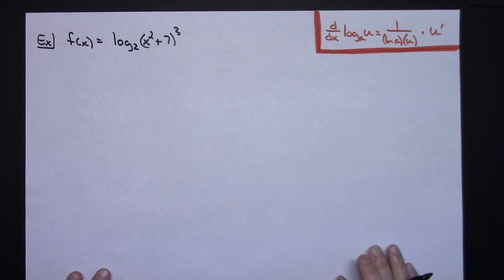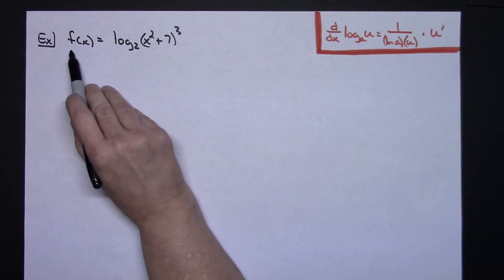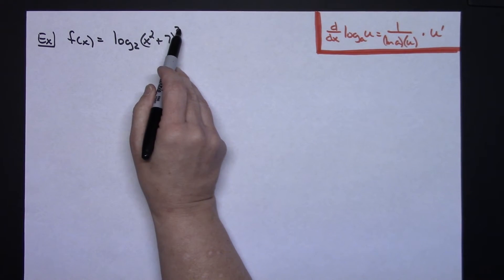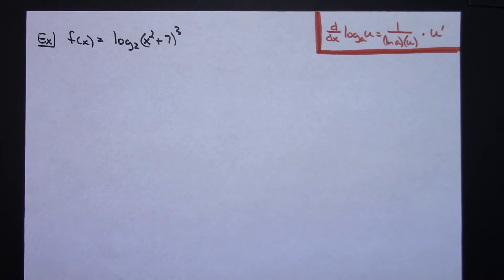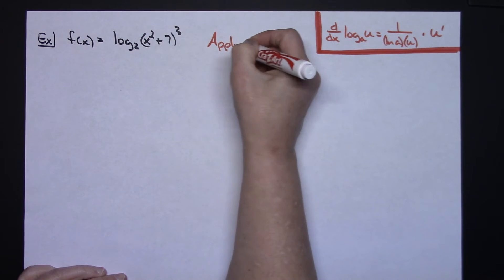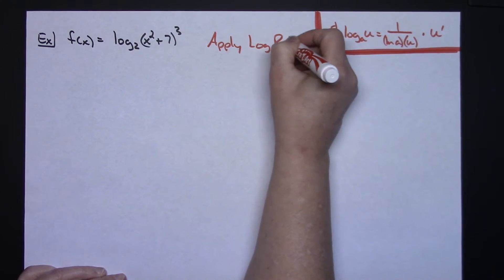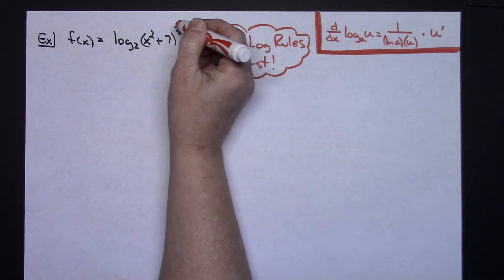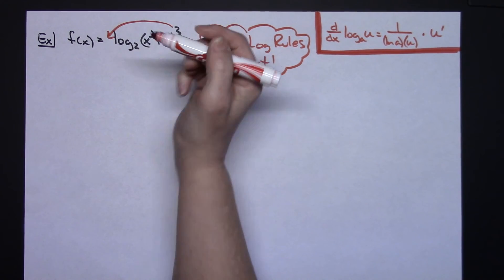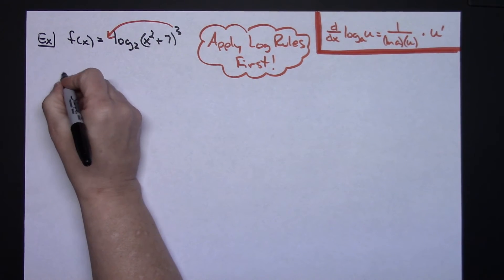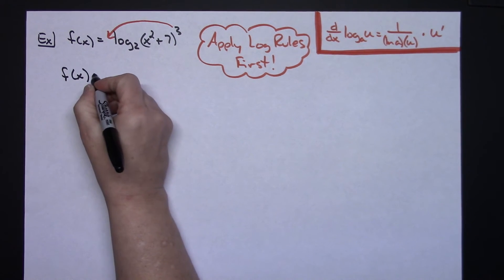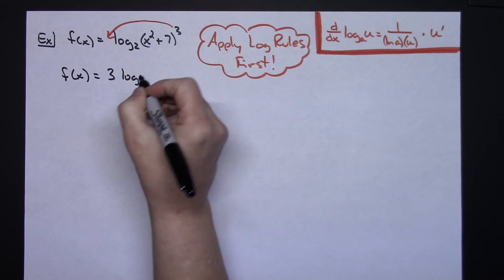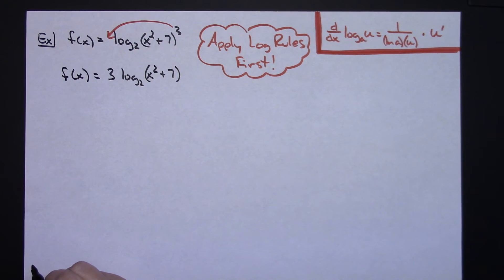We'll do one more, a little more complicated because you'll have to apply some log rules first. Our function is f of x equals log base 2 of the quantity x squared plus 7, raised to the third power. The first thing to do is apply log rules before applying the derivative formula — that makes it a lot easier. So the exponent 3 can be brought down in front: f of x equals 3 times log base 2 of x squared plus 7.